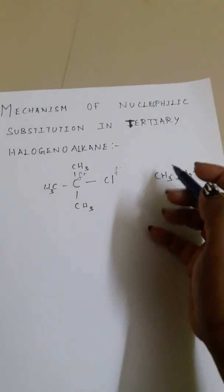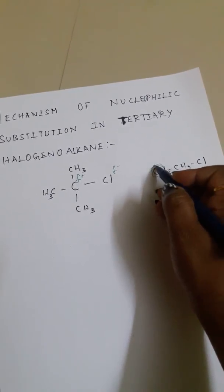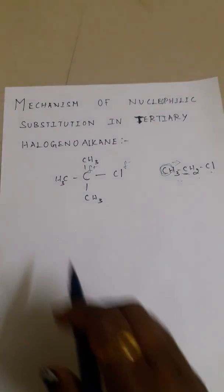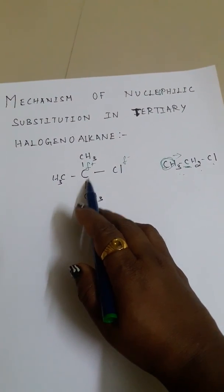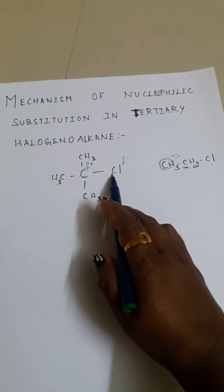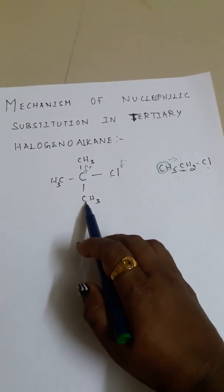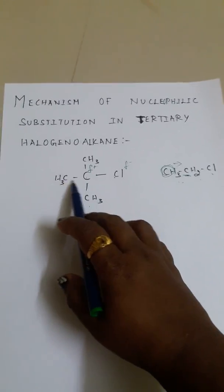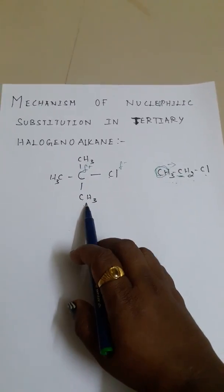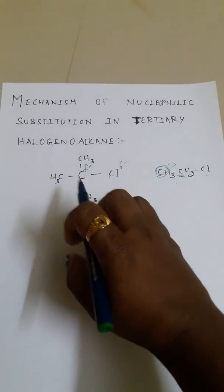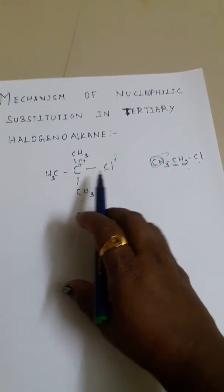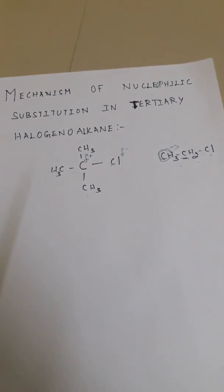That will not happen with tertiary. In primary, there is only one carbon atom which can donate electrons. But in tertiary, if the carbon loses its electron, the three other methyl groups also donate electrons because they are also alkyl.